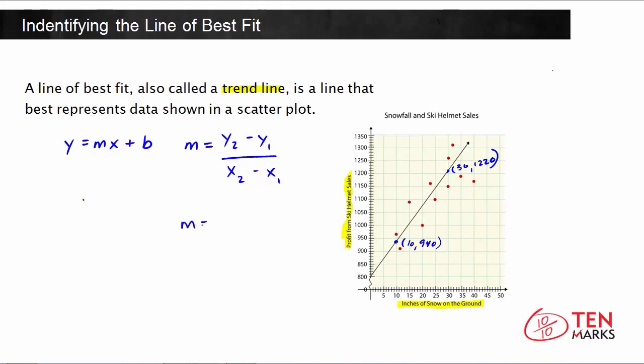So set up your slope. We want to subtract 1220 minus 940, those are the y coordinates, and put that over the difference in the x coordinates, so 30 minus 10. When you do the subtraction, you get 280 on top and 20 below, and this simplifies to 14. So the slope of this line is 14.